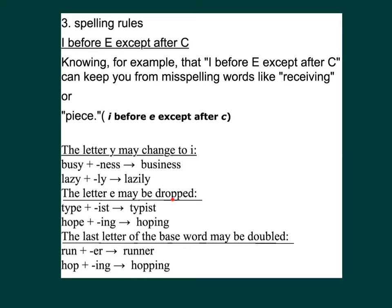The letter E may be dropped. For example: type + IST = T-Y-P-I-S-T, typist. Hop + ING = H-O-P-I-N-G, hoping. The last letter of the base verb may also be doubled: run + ER = R-U-N-N-E-R, runner. Hop + ING = H-O-P-P-I-N-G, hopping.